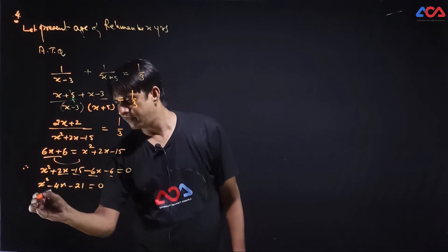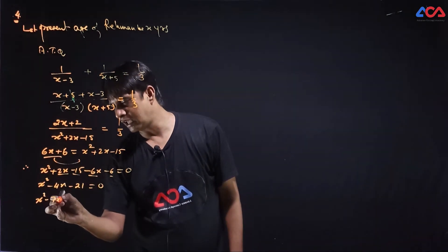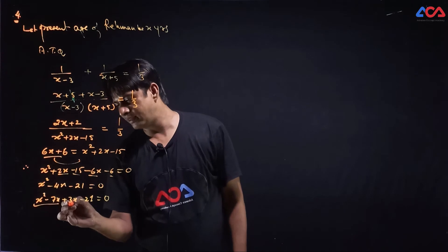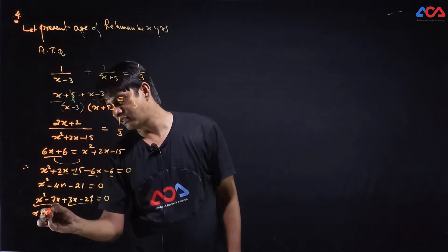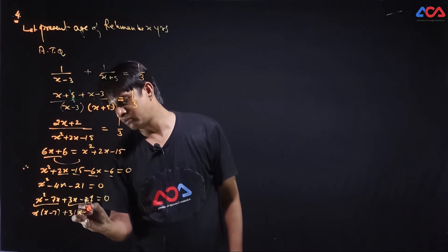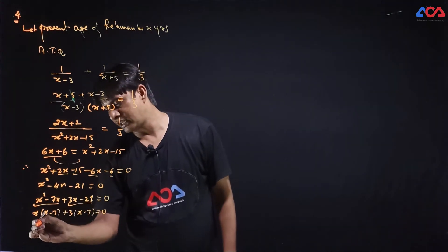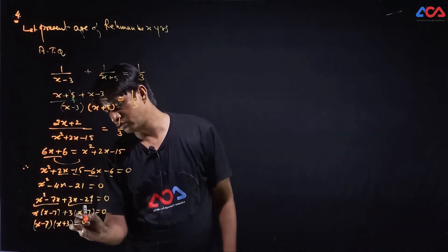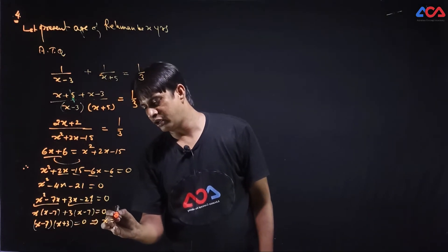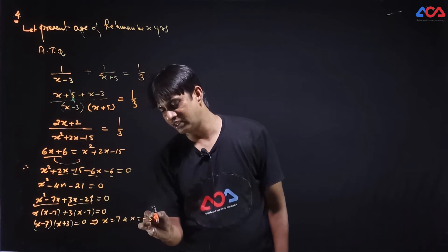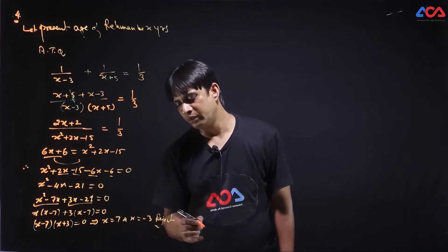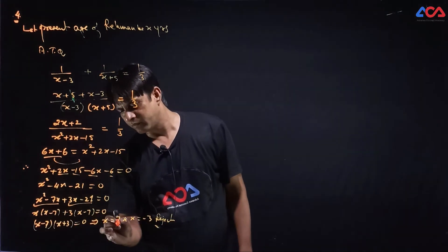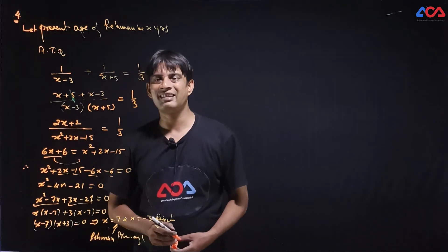Factorize. x square minus 7x plus 3x minus 21 which is equal to 0. First two parts common, last two parts 3 common. Then x, x minus 7, 3, x minus 7 which is equal to 0. x minus 7 and x plus 3 which is equal to 0. So x value, x is equal to 7 and x is equal to minus 3 rejected. So Rehman present age is 7 years.